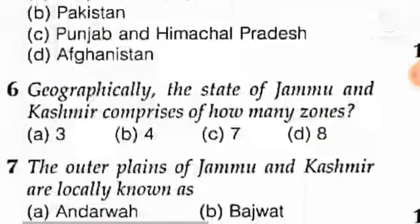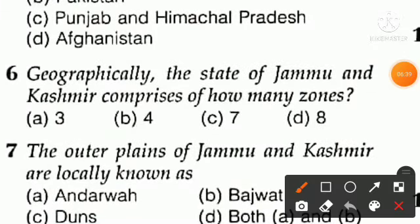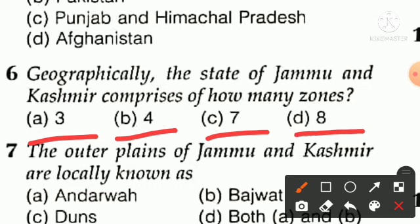Question number six: geographically, the state of Jammu and Kashmir comprises how many zones? Option A is 3 zones, option B is 4 zones, option C is 7 zones, option D is 8 zones. You have to remember: geographically, Jammu and Kashmir has 7 zones. Option C is the right answer.